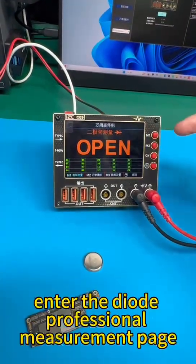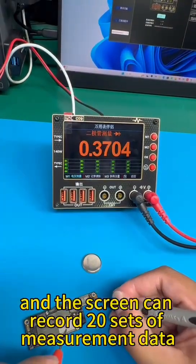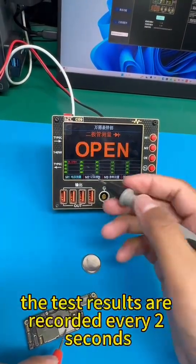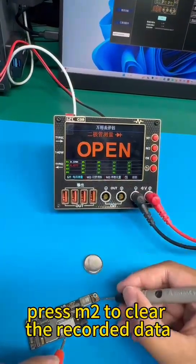Press the return key to enter the diode professional measurement page. The screen can record 20 sets of measurement data. The test results are recorded every two seconds. Press M2 to clear the recorded data.